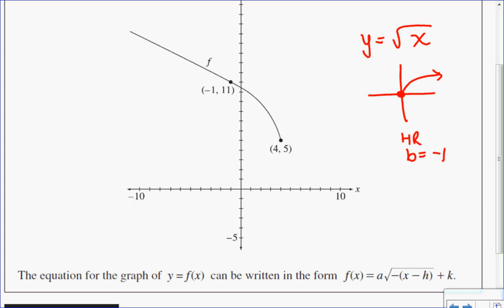I also know that I'm not starting at 0, 0. I'm actually starting at 4 and 5. So that means I've had a horizontal translation 4 units to the right, and a vertical translation of 5 units up.